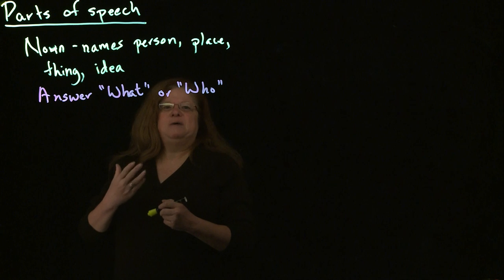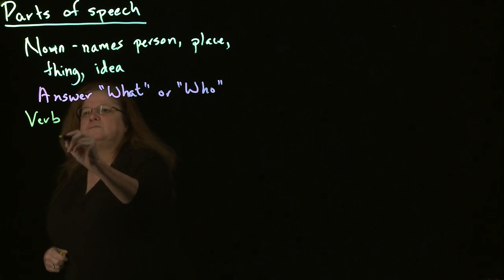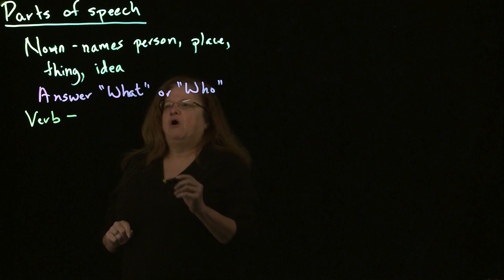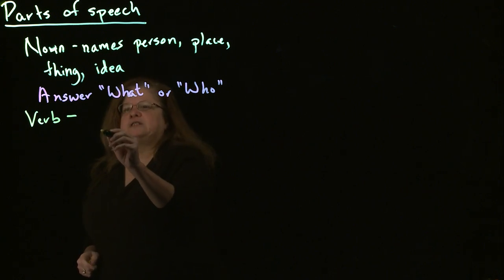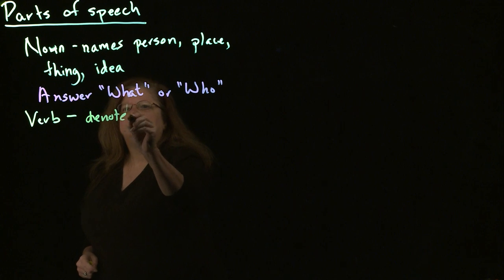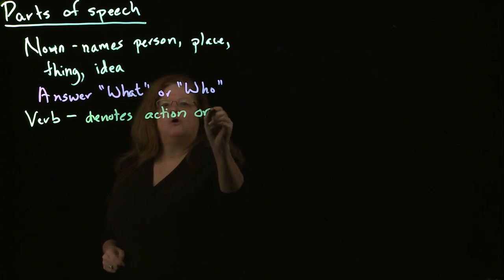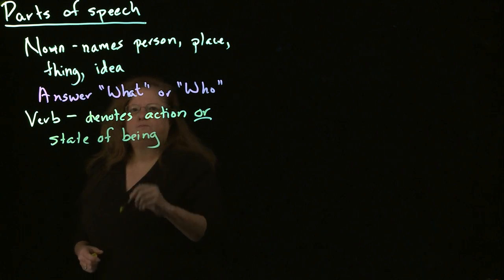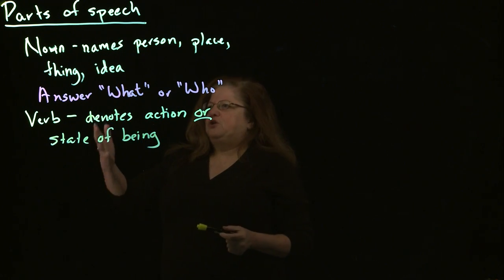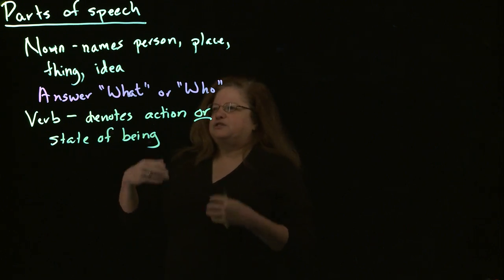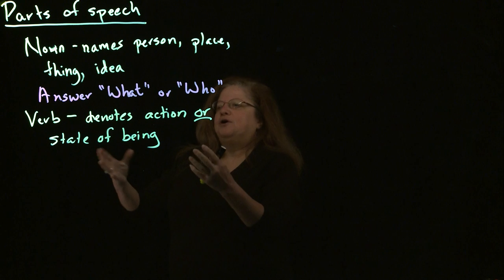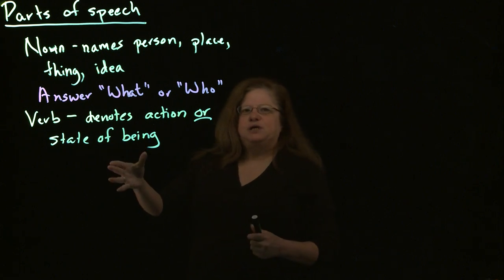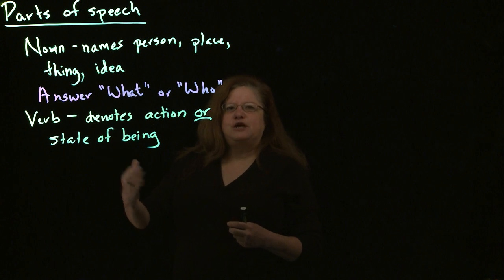We also have a very basic building block: the verb. A lot of people may have been told in the past that a verb is an action word, but it's not quite that. A verb is something that denotes an action or a state of being. So when you are looking for a verb, sometimes it's an action — things like run, read, or break. Or it may also be what's known as a linking verb, which doesn't denote an action but a state of being. The verb 'to be' is the most common state of being verb.